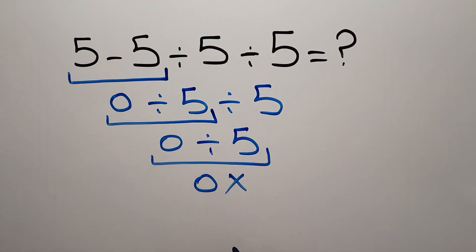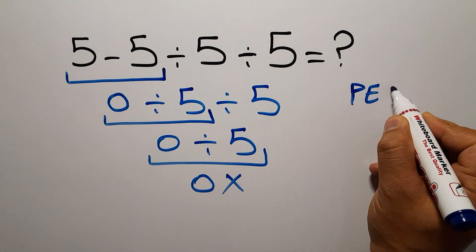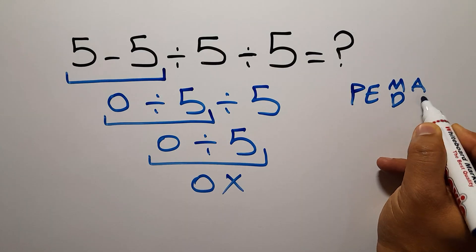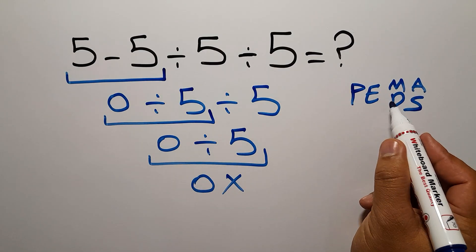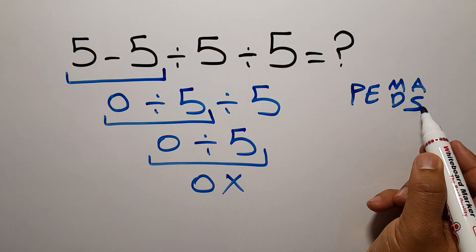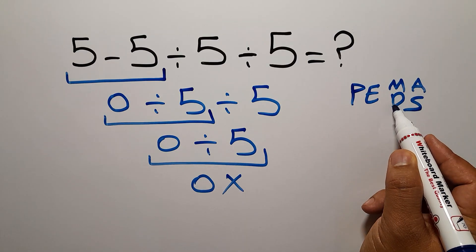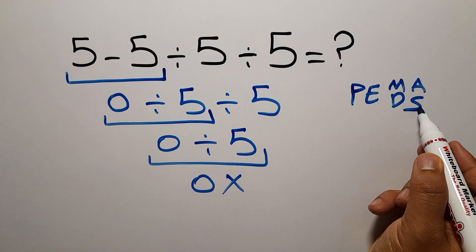But this answer is not correct. Because according to the order of operations, which is PEMDAS, division comes before subtraction. D stands for division and S stands for subtraction.